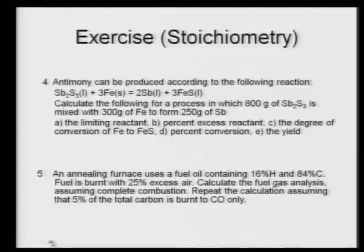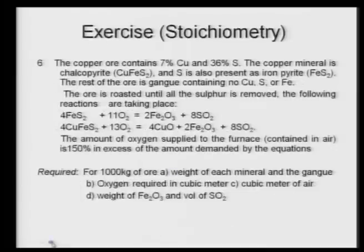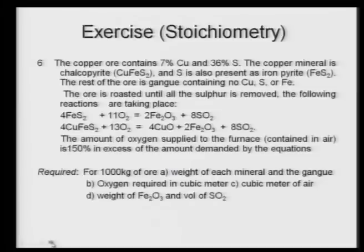Problem 5: An annealing furnace uses a fuel oil of given composition, burned with 25 percent excess air. Calculate the flue gas analysis assuming complete combustion, then repeat assuming 5 percent of total carbon is burned to CO only. Problem 6: A copper ore contains Cu Fe S₂ and FeS₂. The rest is gangue containing no copper, sulphur, or iron. The ore is roasted until all sulphur is removed. Find the weight of each mineral, oxygen required, and weight of Fe₂O₃ and volume of SO₂, with 150 percent excess oxygen supplied.